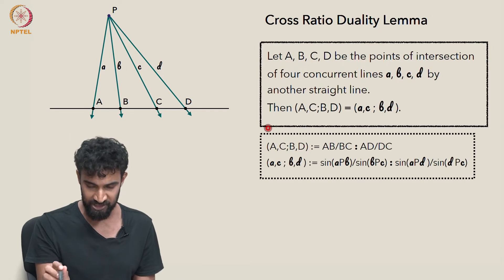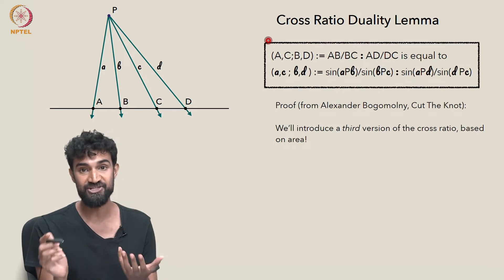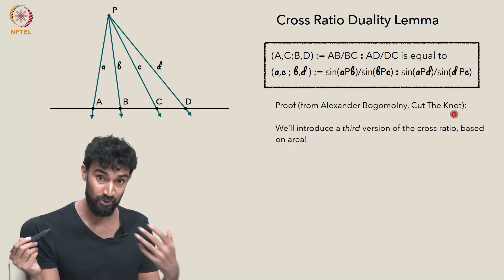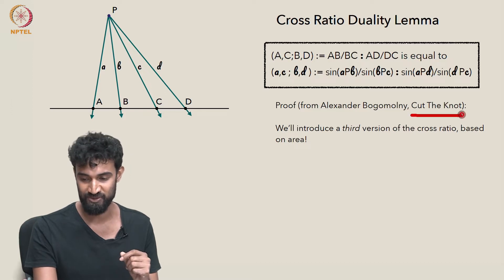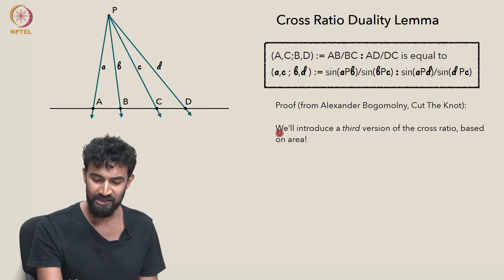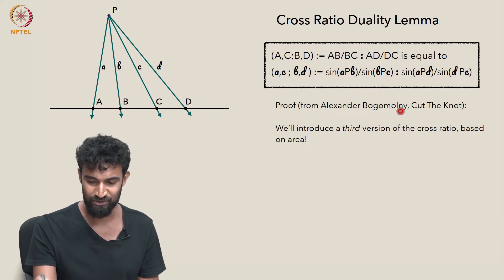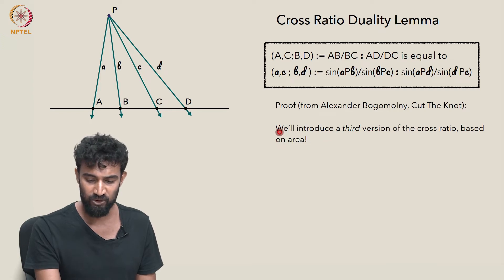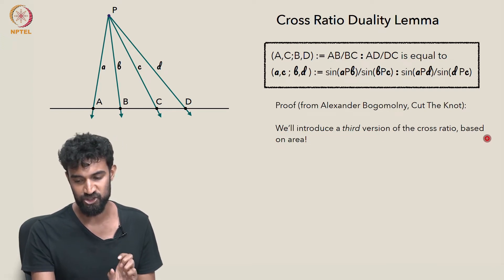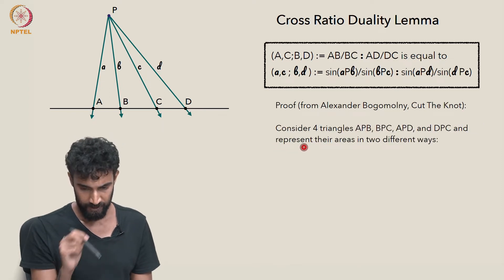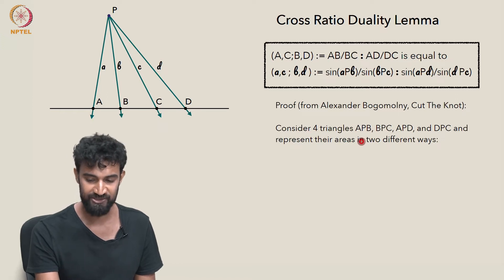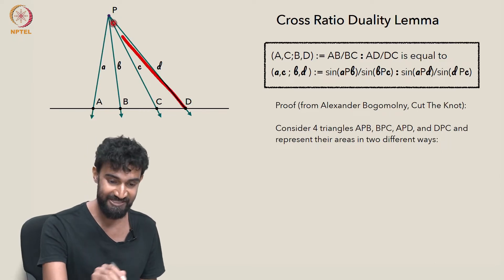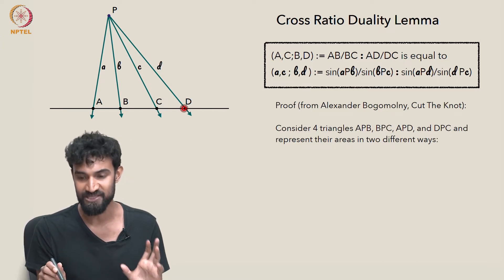Let's see how to prove this — I'm going to hide the actual statement of the lemma, but the lemma just says that these two cross-ratios are equal. The proof is from the website Cut the Knot; you can find it by searching for the cross-ratio on Cut the Knot. It's transmitted by Alexander Bogomolny, but it might be much older — possibly classical in origin. The method of the proof is to introduce a third version of the cross-ratio based on area. So let's consider four triangles: APB, BPC, APD, and DPC, and represent their areas in two different ways.